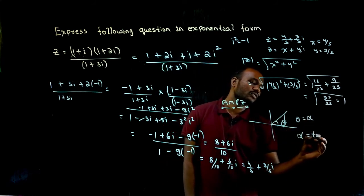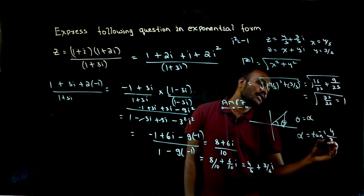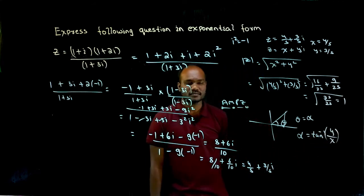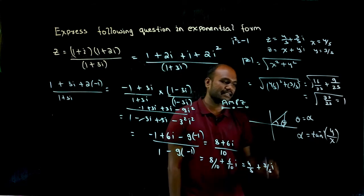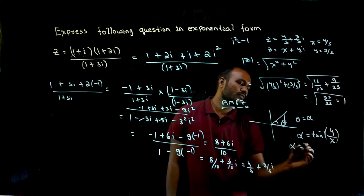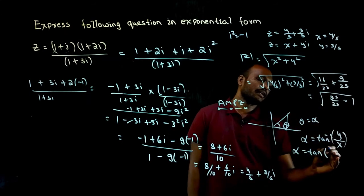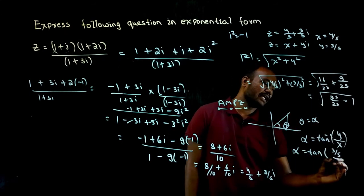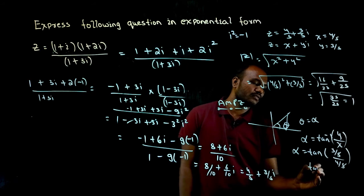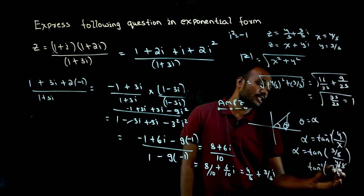What is alpha? tan inverse of y upon x. Tan inverse of y upon x. So if you take tan inverse of what is y? y is 3 by 5 by 4 by 5. 5 and 5 get cancelled, so tan inverse of 3 by 4 is the solution.